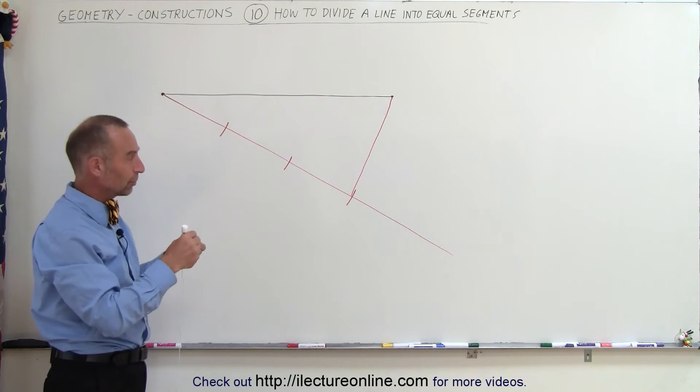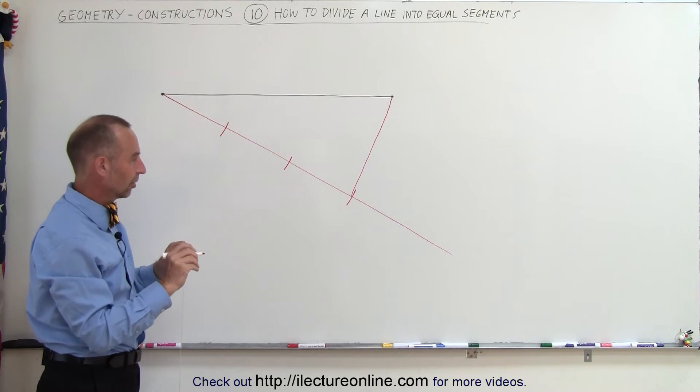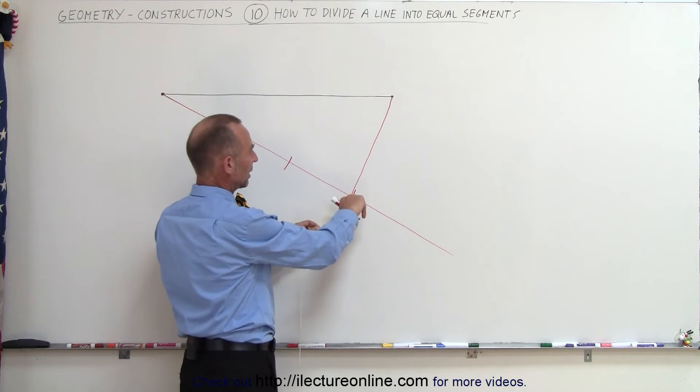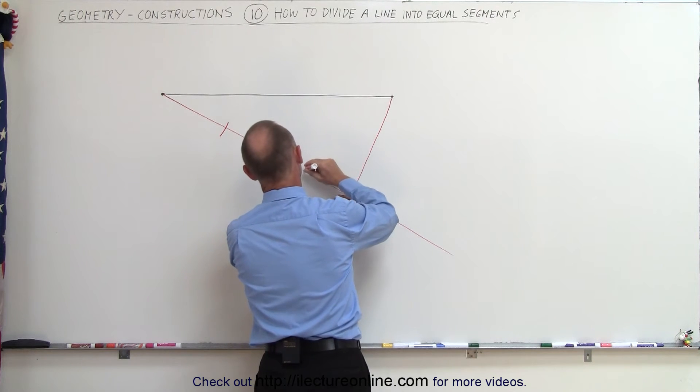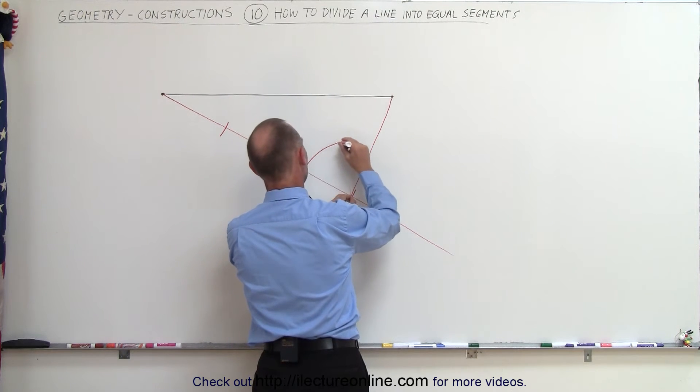So next we're going to draw three arcs starting from the point where these two meet, over here, coming back in this direction. So I'm going to draw an arc in this direction, like so.